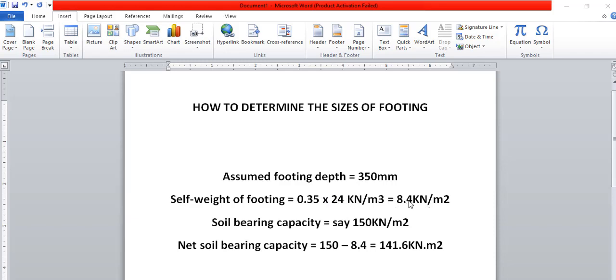Our soil capacity is 150 kN/m2. Now for the net bearing capacity, subtract the weight of the footing from the bearing capacity and you get the net bearing capacity of 150 - 8.4 = 141.6kN/m2, and that is what we will be working with.